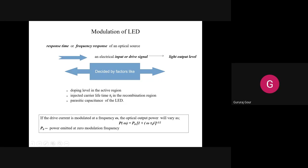The deciding factors for LED modulation are: first, the doping level of the active region. Modulation here concerns the LED source taking part effectively in the intensity modulation of our information. We use the light coming from the LED to modulate our message signal - this is called intensity modulation. How effectively it takes part in this intensity modulation depends on the doping profile of the active region.